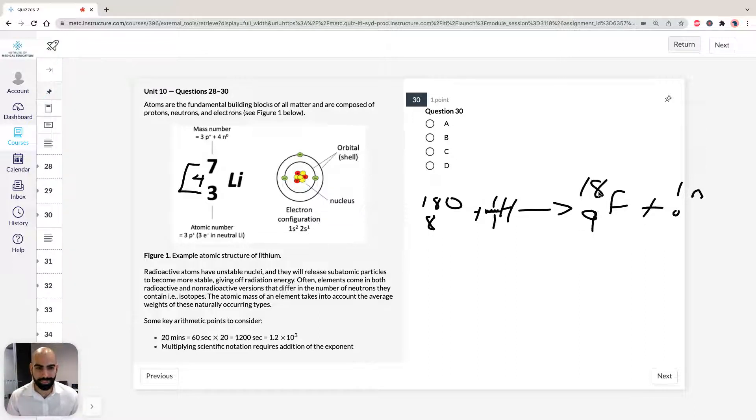So think about it. We've got 9 neutrons, 10 neutrons. So we're adding a neutron. So that's why the answer for 30 has to be D.